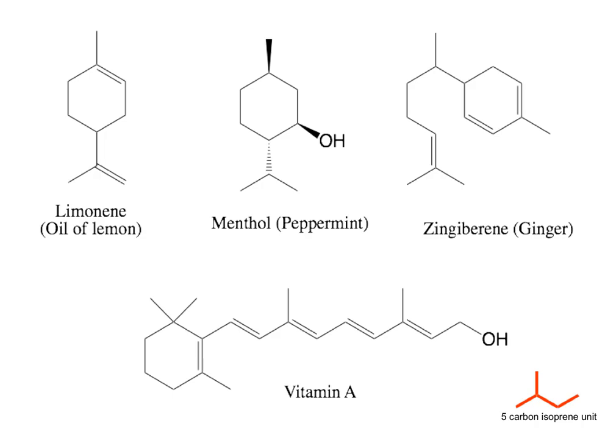Now in one case, in the case of menthol or peppermint, I've shown actually the individual enantiomer that's seen in nature. There are some chiral centers that I've not labeled, for example in ginger — I've left these chiral centers unlabeled, and also in oil of lemon.